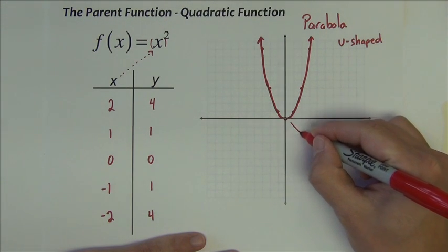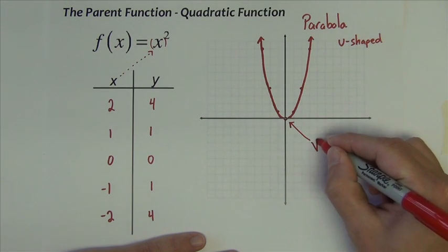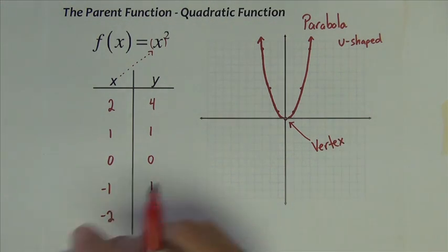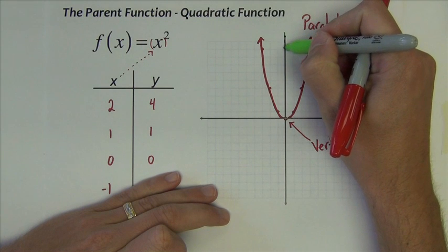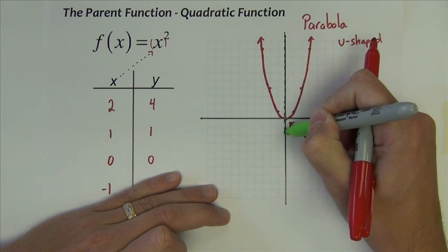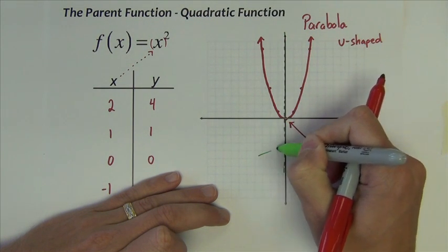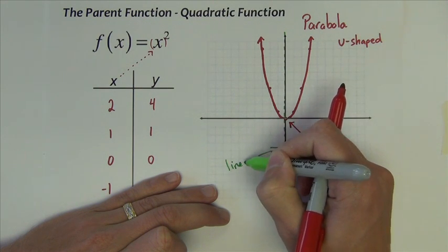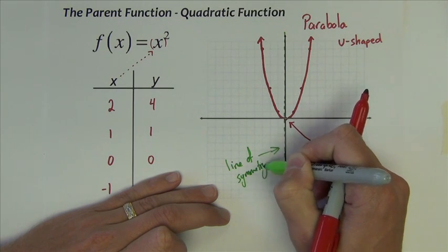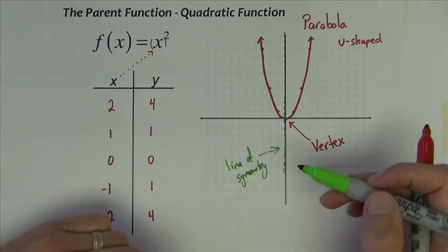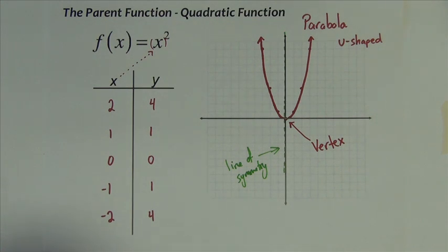All parabolas have a vertex point, which is right there at the bottom of this graph at the origin. They also all have what we call a line of symmetry, a line that cuts the graph in half. So these graphs are symmetric. Their basic graph is symmetric about the y-axis.